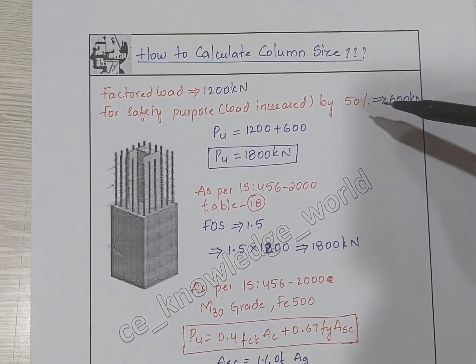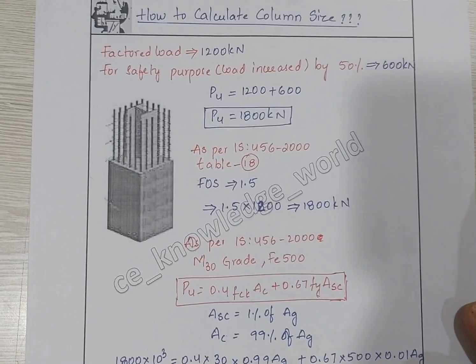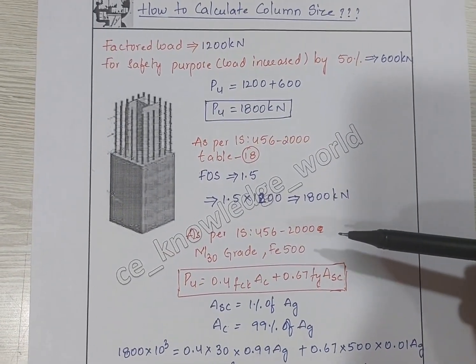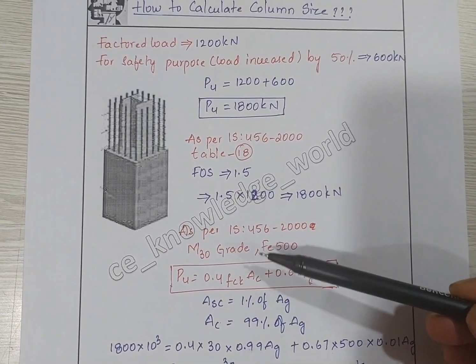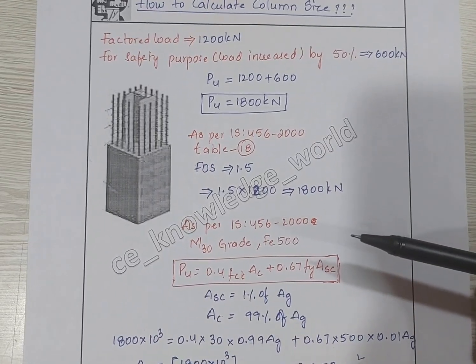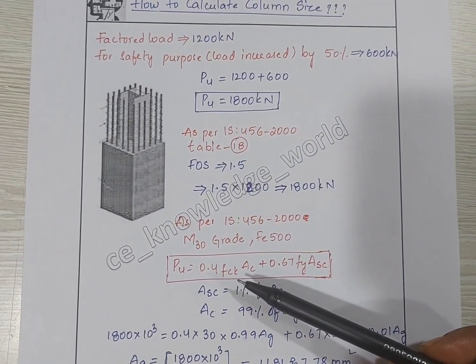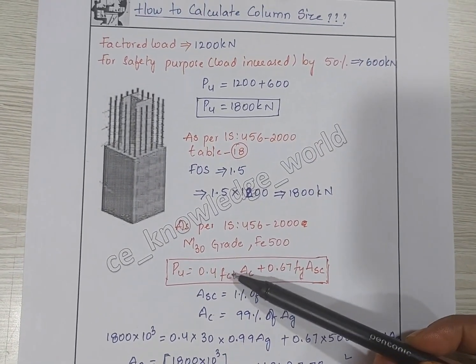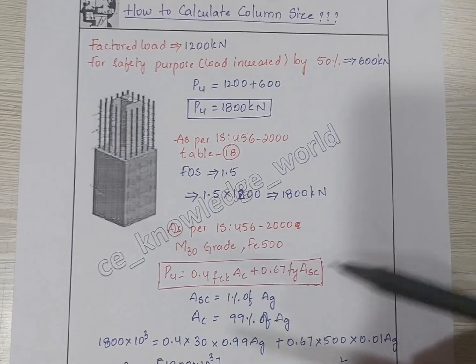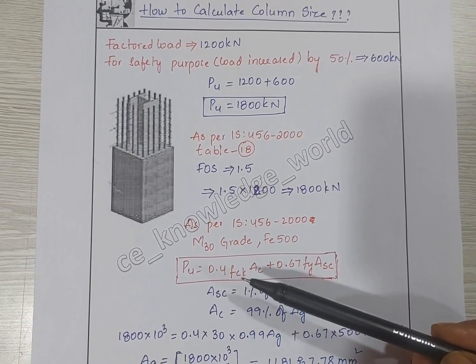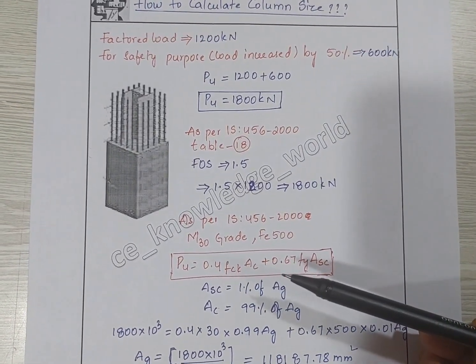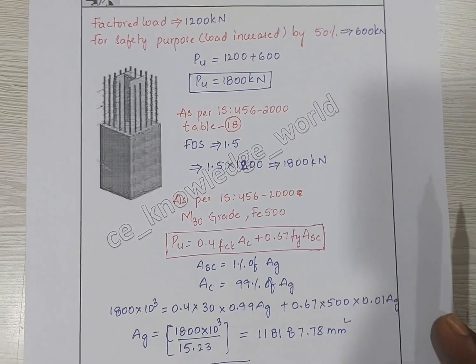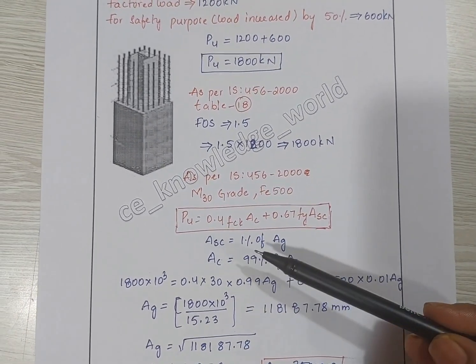As per IS 456-2000, considering M30 grade of concrete and Fe500, the formula to find the size of the column is: Pu equals 0.4 fck Ac plus 0.67 fy Asc. We are taking Ac equals 1 percent of Ag.